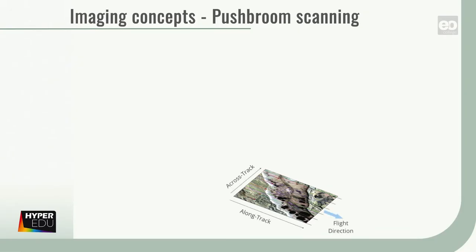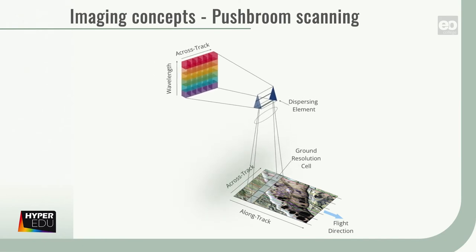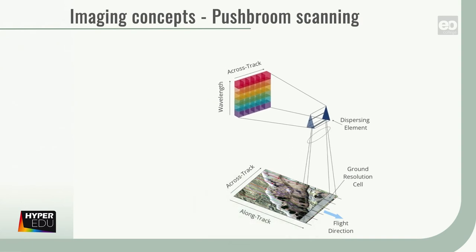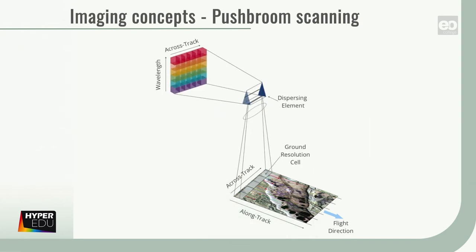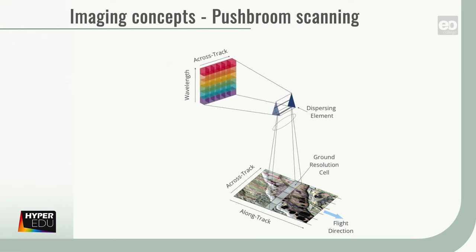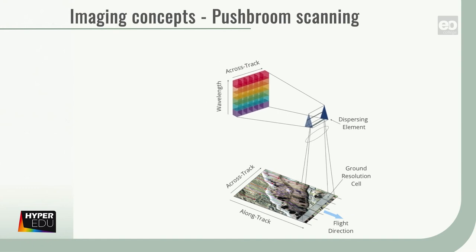A push broom sensor records the radiation across the entire swath in a cross-track direction, but only for a narrow field of view in along-track direction at once in a single measurement. The recorded radiation is split along the spectral direction of the detector array into hundreds of continuous wave bands and read out the array before a new line is recorded.